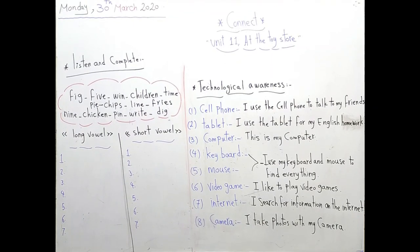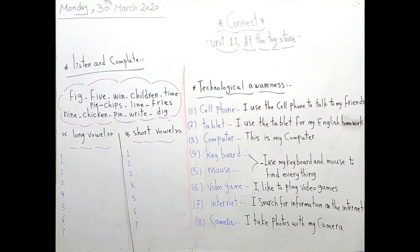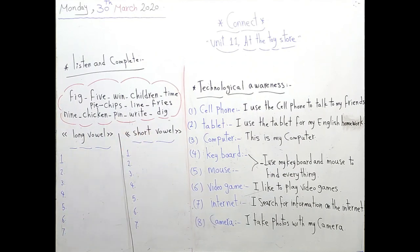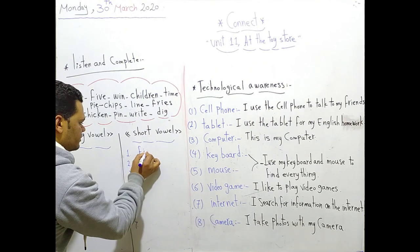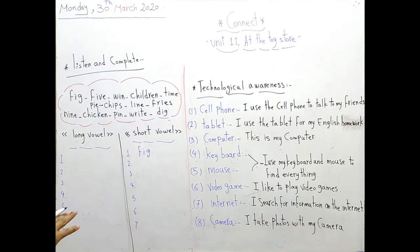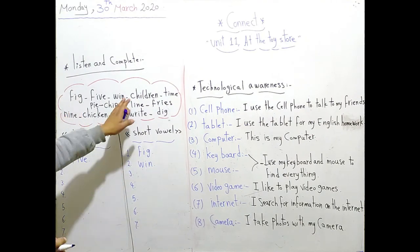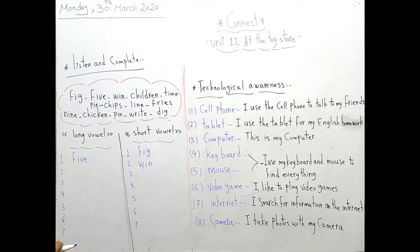Listen and complete. These words contain long I and short I. We will put them in this column, long I, and in this column, short I, short vowel. Number one: pig. Pig. Long or short? Pig, it's short. Number two: five. Five, it's long. Number three: win. Win, it's short. Children. Children, it's short.